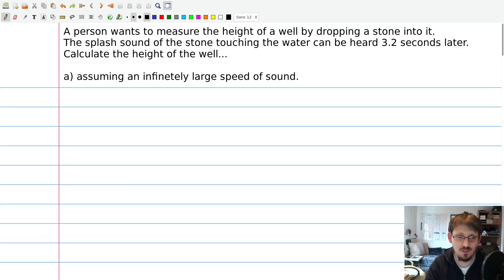In part one of this exercise, we assume that we have an infinitely large speed of sound, which means that we can actually ignore the sound propagation inside the well and we can assume that we instantaneously hear the splash. And then everything gets quite easy, so this is the easier part actually.